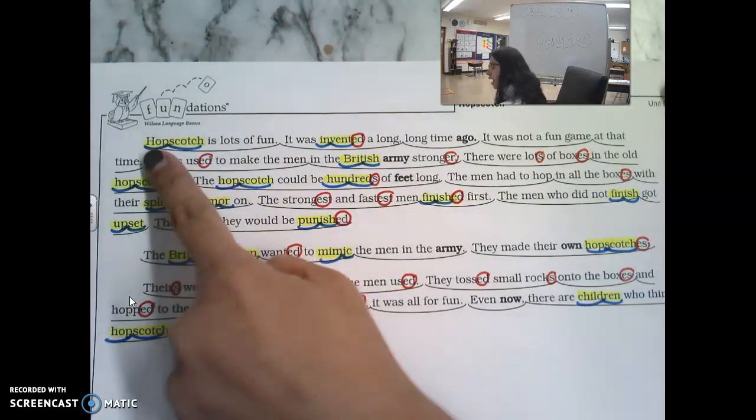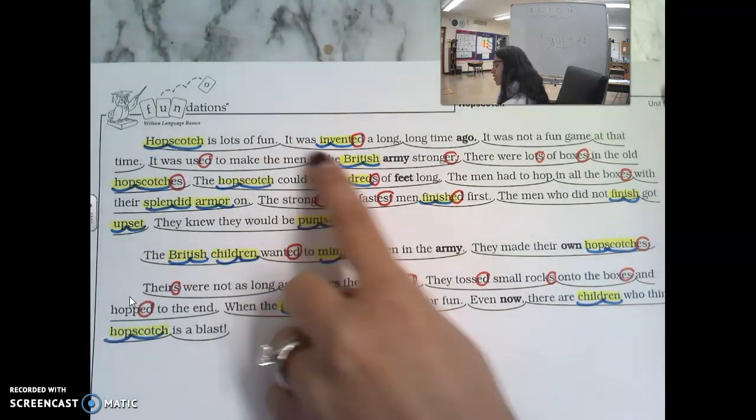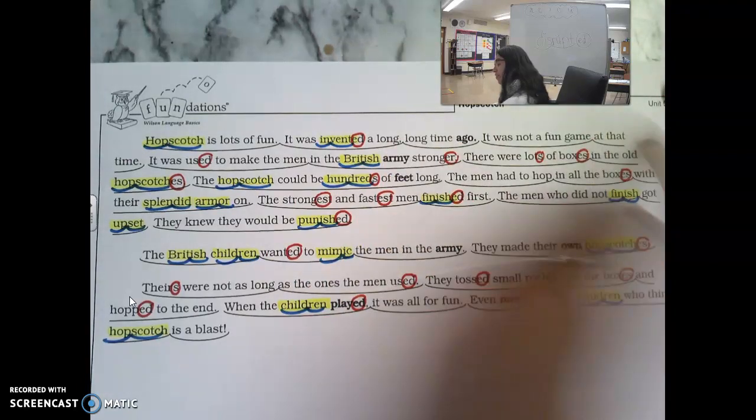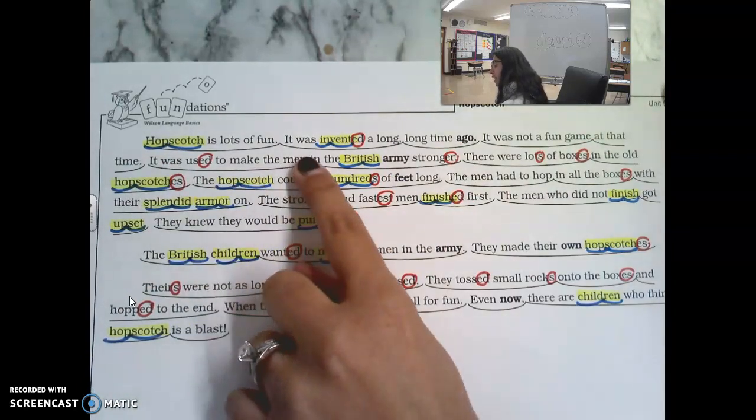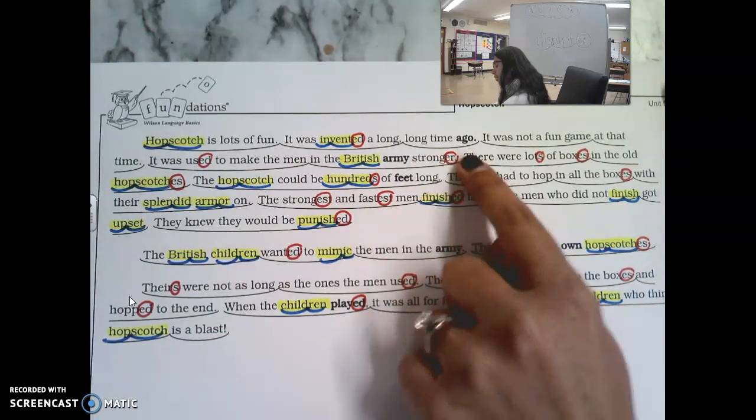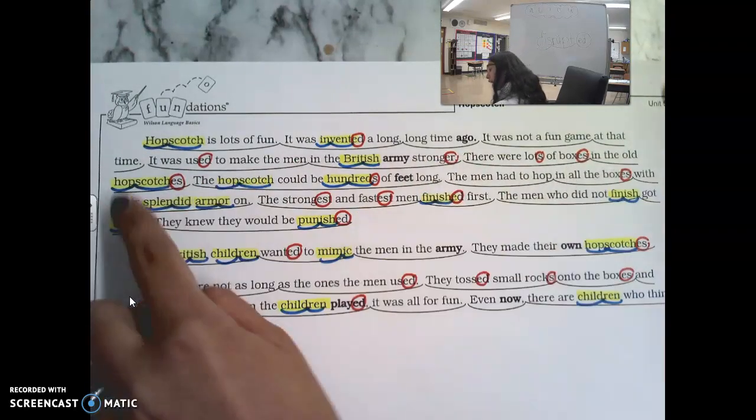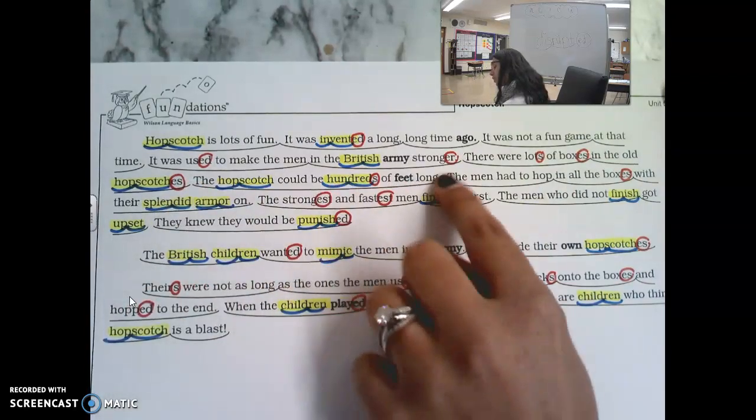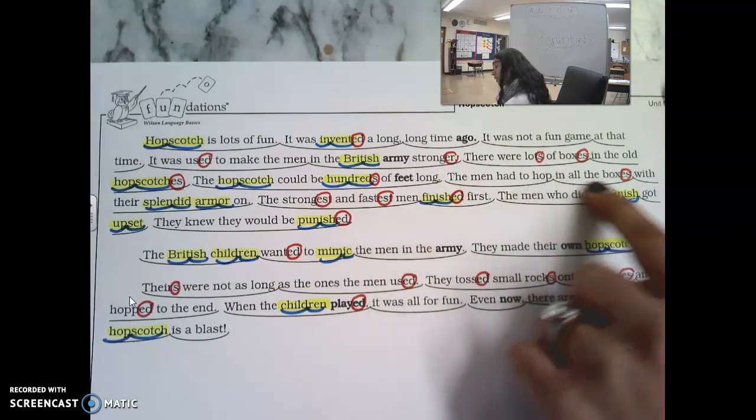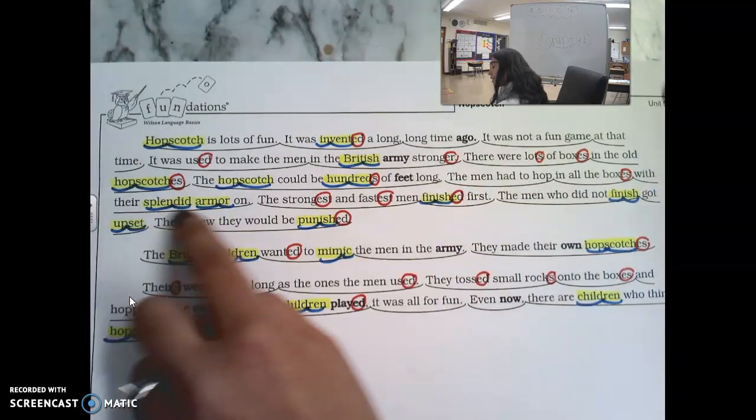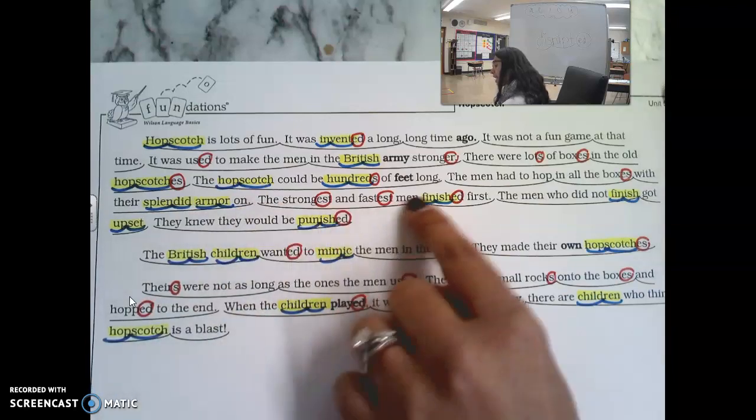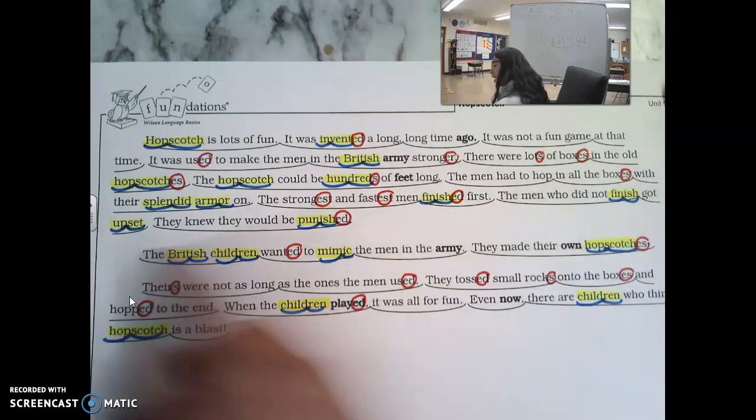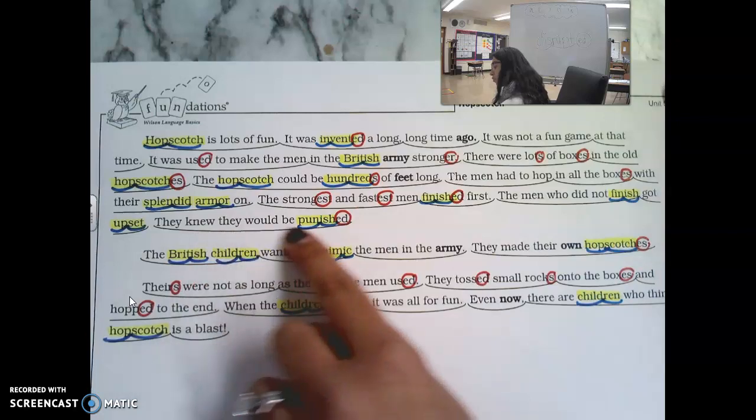It says, hopscotch is lots of fun. It was invented a long, long time ago. It was not a fun game at that time. It was used to make the men in the British Army stronger. There were lots of boxes in the hopscotches. The hopscotch could be hundreds of feet long. The men had to hop in all the boxes with their splendid armor on. The strongest and fastest men finished first. The men who did not finish got upset. They knew they would be punished.